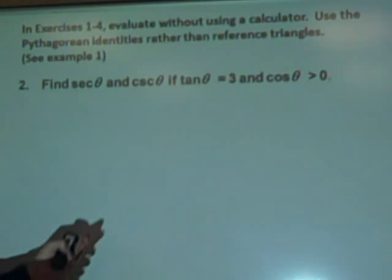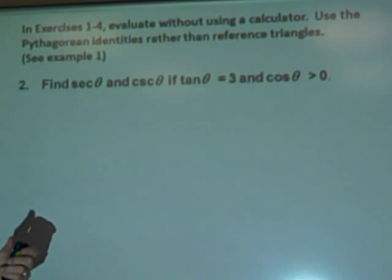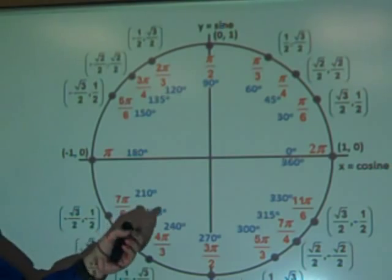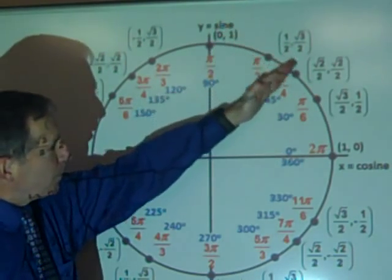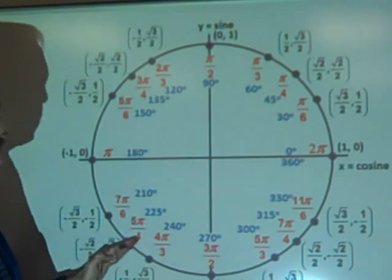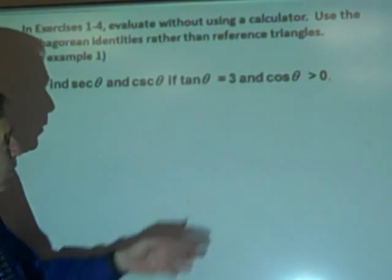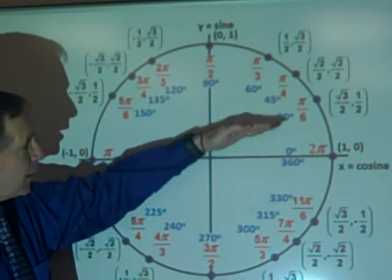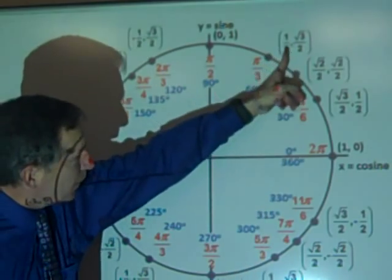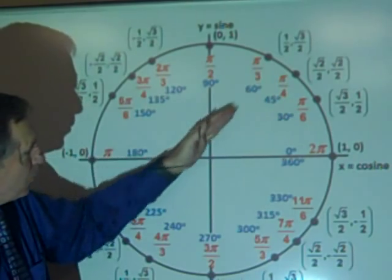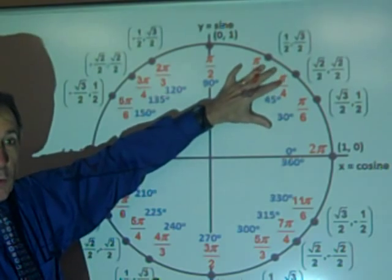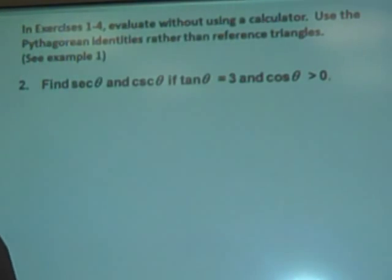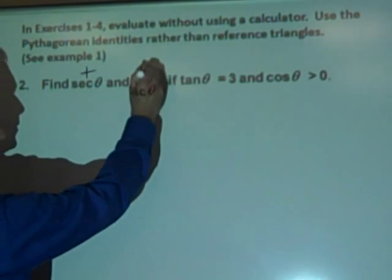Find secant theta and cosecant theta if tangent theta equals three and cosine theta is greater than zero. Looking at our unit circle: tangent theta equals three means we're in quadrant one or three where tangent is positive. Cosine theta greater than zero means we're in quadrant one or four. Between those two conditions, we're limited to quadrant one, so secant theta and cosecant theta are both positive numbers.